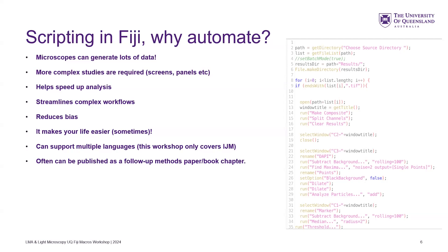Microscopes are making lots of data now, so you can do more complex studies. You might need to do big panels or big screens with lots of data. Scripting can help speed up analysis — rather than doing the same thing 10 times on 400 images, you can do it automatically. It also reduces bias, because if you're manually selecting thresholds, you might not do the same thing for every image, and it generally makes your life easier.